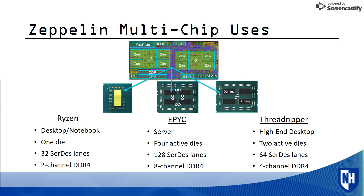Zeppelin has multi-chip uses. It can be scaled to be used on Ryzen, EPYC, and Threadripper platforms. Ryzen has one Zeppelin die, EPYC has four active Zeppelin dies, and Threadripper has two active Zeppelin dies with two turned off, dubbed dummy dies.